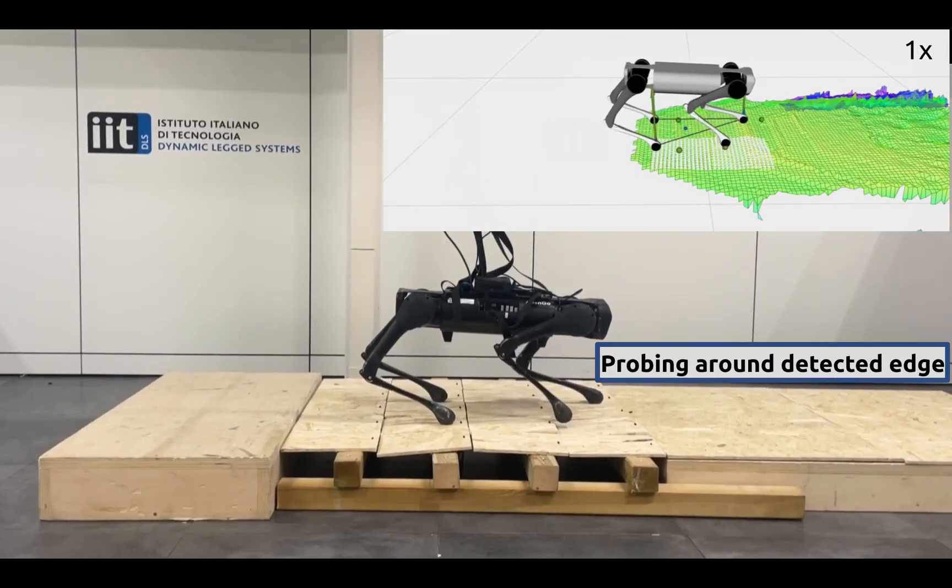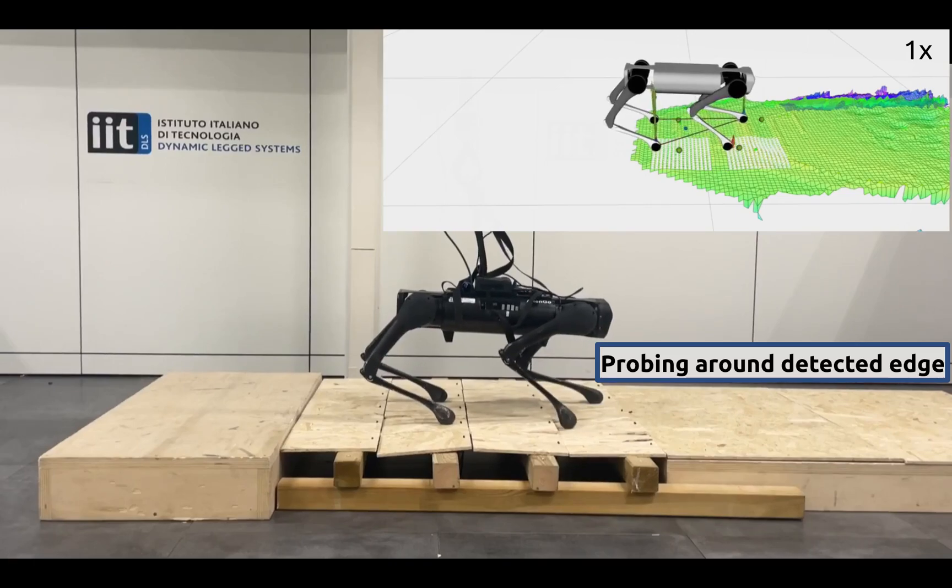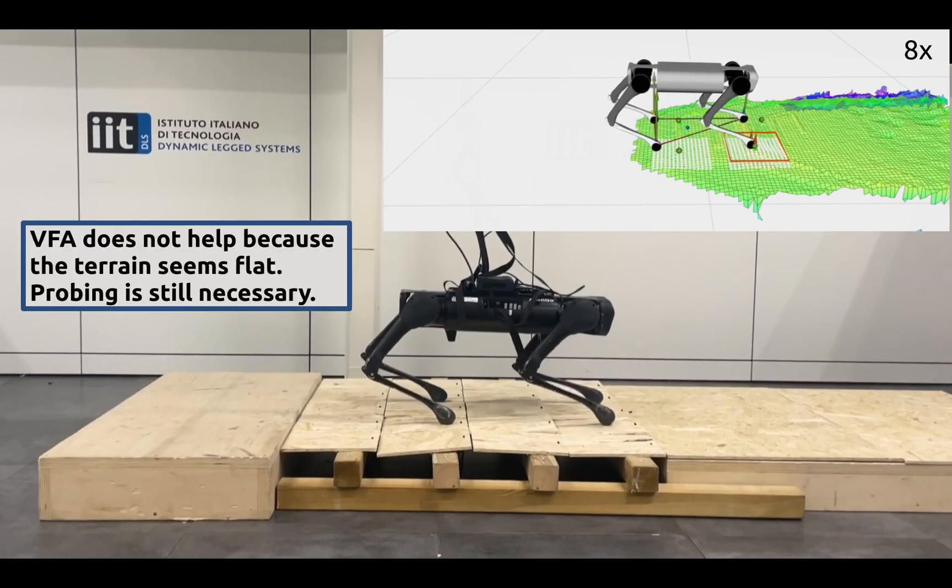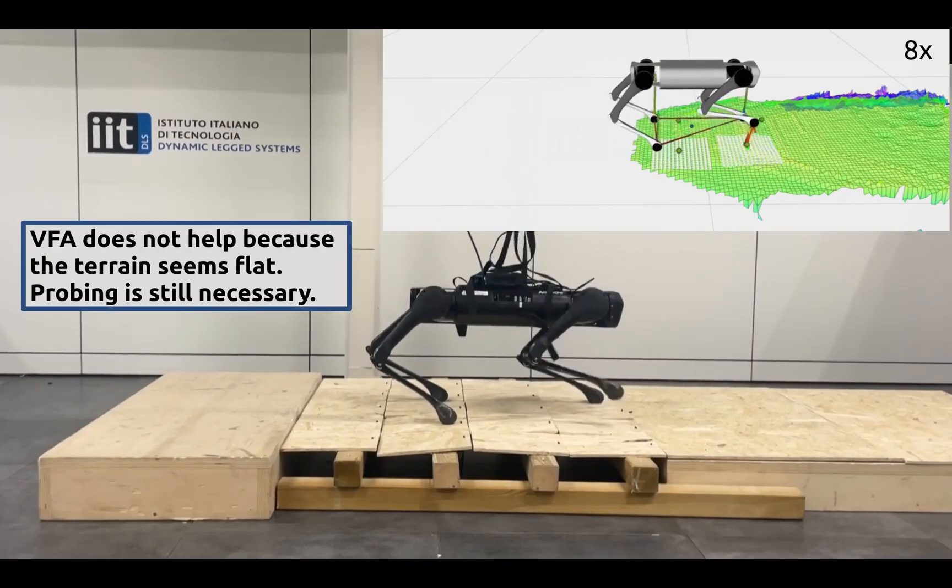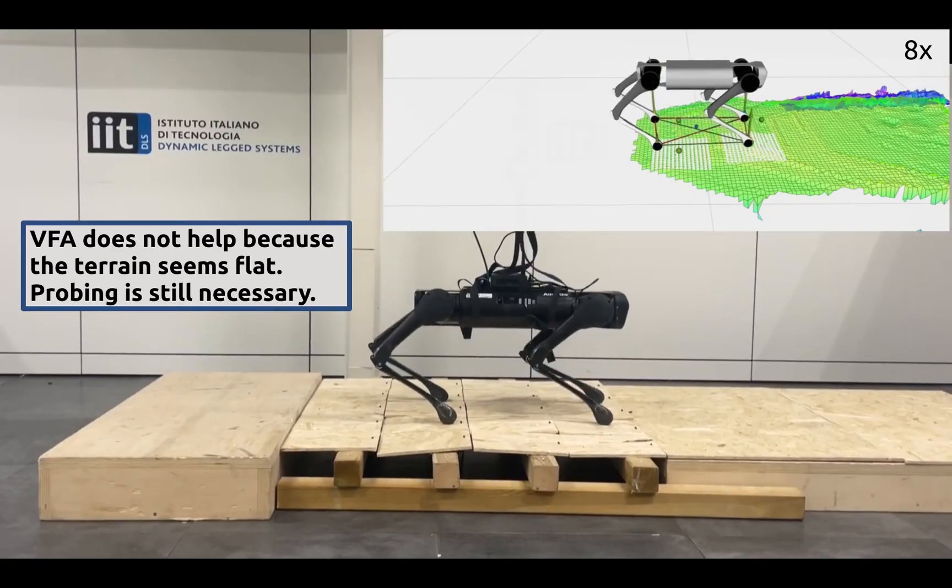When the foot is placed near the edge, probing detects the instability and prevents collapse once again. The robot can then safely traverse the entire terrain.